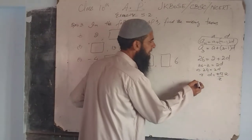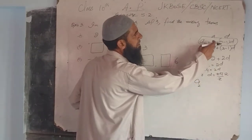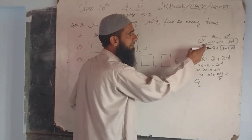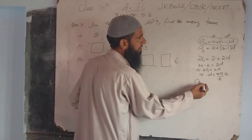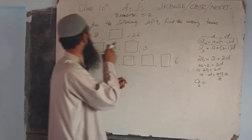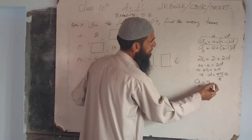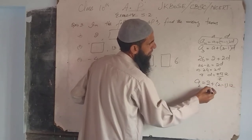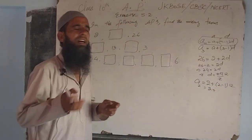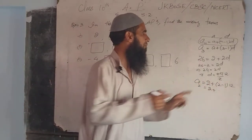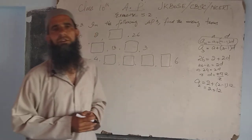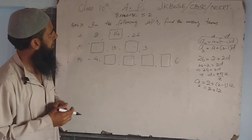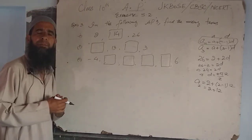D is 12. Now we have to find the second term A2. Using An = A + (N-1)D with N=2: A2 = 2 + (2-1) into 12 = 2 + 1 into 12 = 2 + 12 = 14. So the second term is 14. This completes the first part.